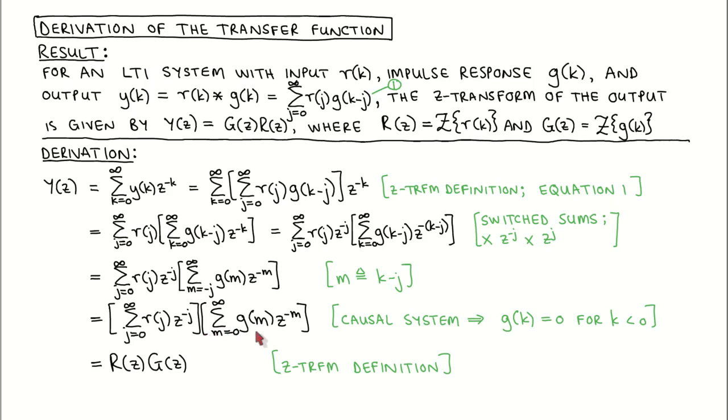The inner sum is now independent of the summation variable J of the outer sum, and we can write things as the product of infinite sums. When we look at the sums, we see that the left sum is the Z-transform of the input signal, and the right sum is the Z-transform of the impulse response, which is the result we want to prove.